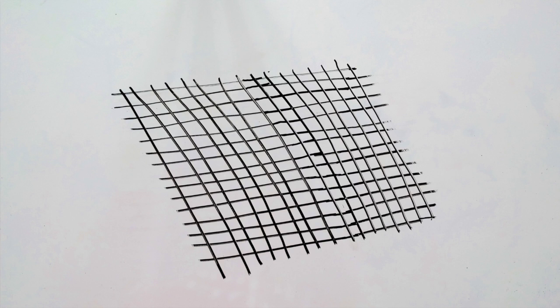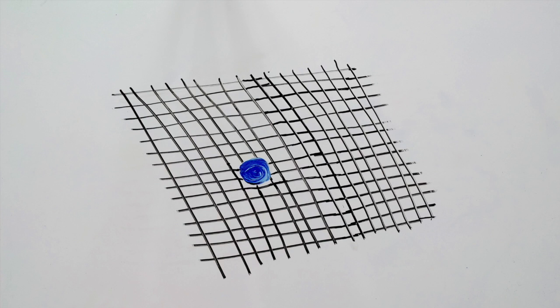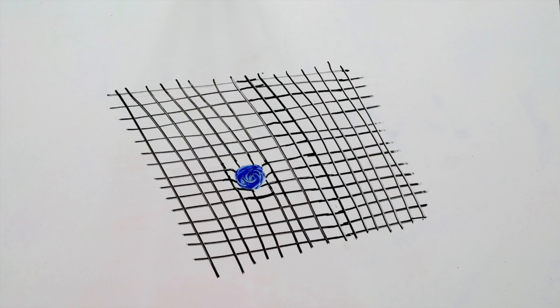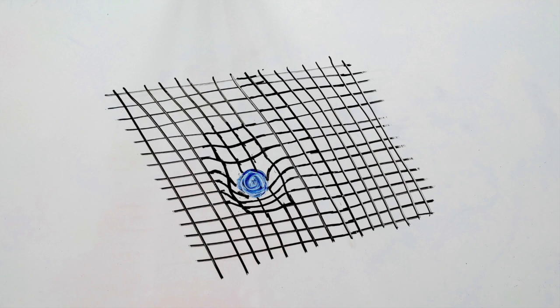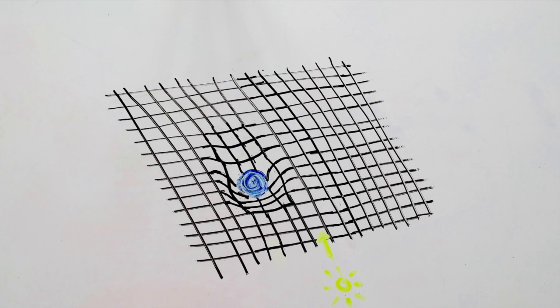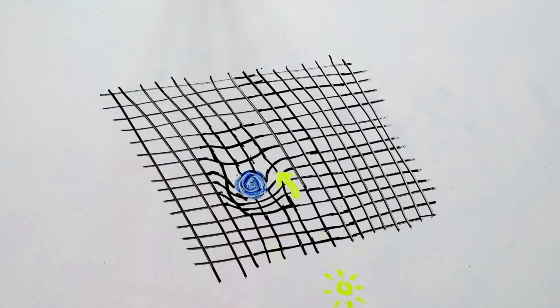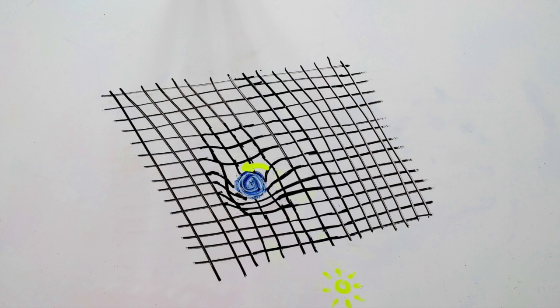According to Einstein's theory of general relativity, objects of high masses are able to distort the spacetime spectrum. This will create a gravity well, which will exert a gravitational pull on all matter, causing even light to bend.